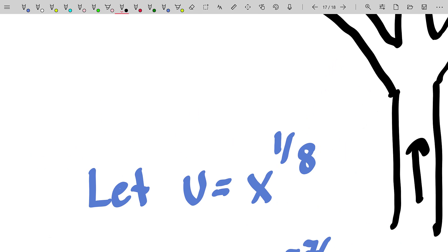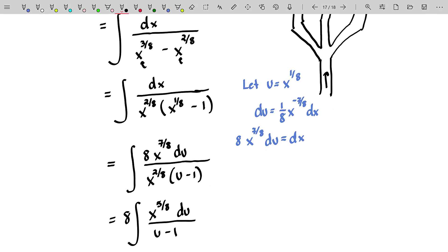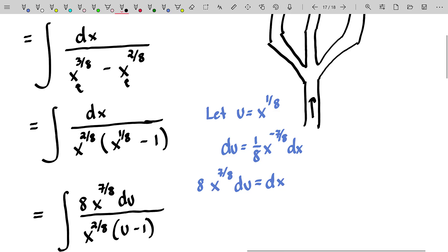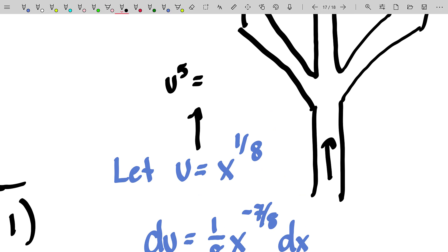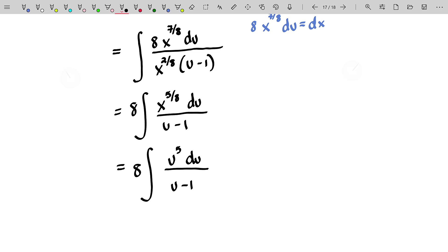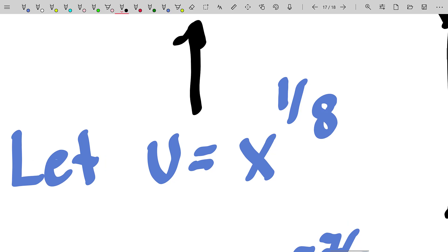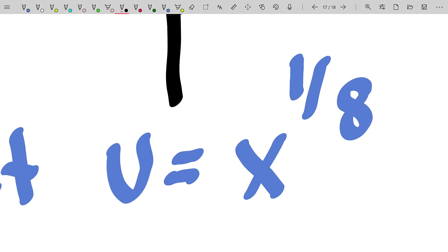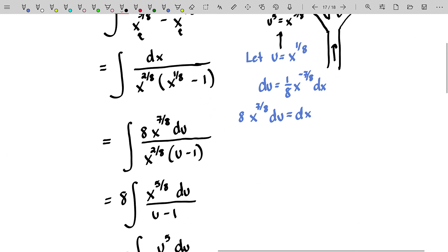But this is why we made our substitution u is equal to x to the one eighth. Because if you raise both sides to any power, let's say you had in the end there an x to the three eighths, I would just raise both sides to the third power. In this case, I have an x to the five eighths. So I'll raise both sides of this to the fifth power. So I know x to the five eighths is u to the fifth. I'll substitute that in. That's why allowing u to equal x to the one eighth is a great substitution because no matter what we have in terms of x in the future, it'll always be written in terms of eighths. I can derive that from just a single equation.